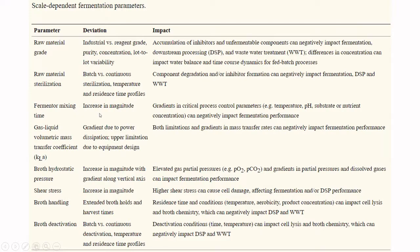Fermenter mixing time is a key parameter — in large scale, mixing time will be very high, so mechanisms must ensure adequate mixing throughout all parts of the fermenter. The gas-liquid volumetric mass transfer coefficient is also important — in a huge fermenter, dissolved oxygen gradients can form, so spargers are placed at multiple locations to ensure oxygen is supplied in adequate quantities. Bulk hydrostatic pressure is an issue in very large fermenters: the pressure at the bottom can be so high it crushes microorganisms.